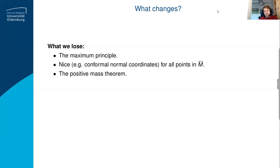Finally, and more technically, the positive mass theorem doesn't hold anymore. The positive mass theorem roughly says you can define a certain quantity called the mass, and this vanishes if and only if your manifold is Euclidean — this is for asymptotically Euclidean manifolds. There's a local version, which involves studying solutions of the constant scalar curvature equation on open sets in R^n, but not every point on a singular space looks like an open set in R^n, so you can't do that local analysis.